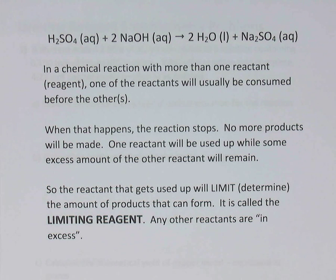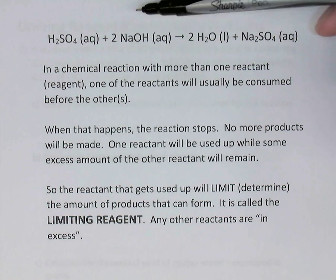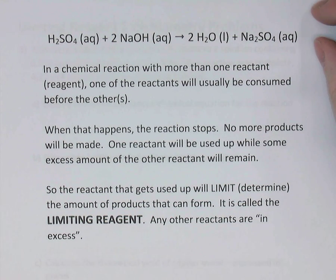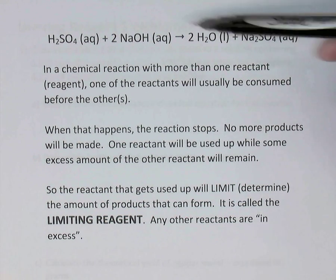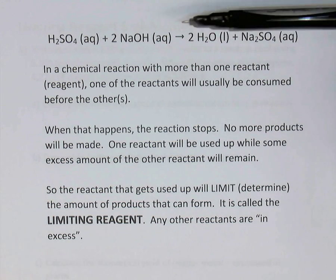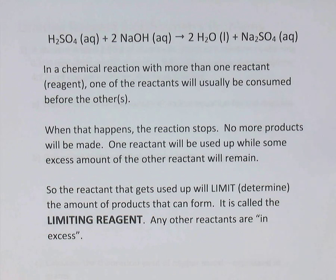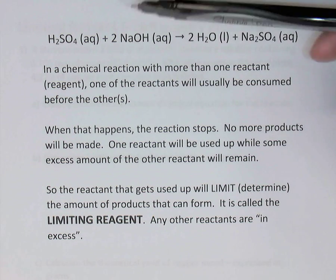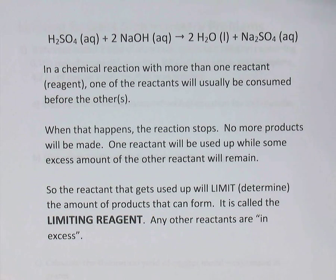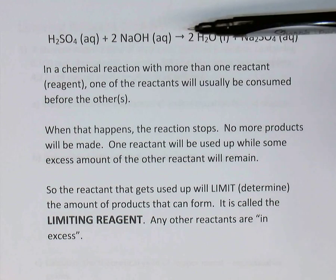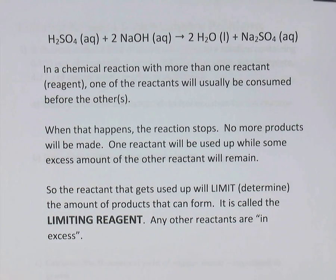Today's video looks at the concept for grade 11 chemistry of limiting reagents. Consider an example of a chemical reaction with more than one reactant. In the lab, if you were actually doing this reaction, you'd be using some sulfuric acid out of a bottle and some sodium hydroxide solution. The actual chemicals in the lab are referred to as reagents — almost synonymous with reactants.